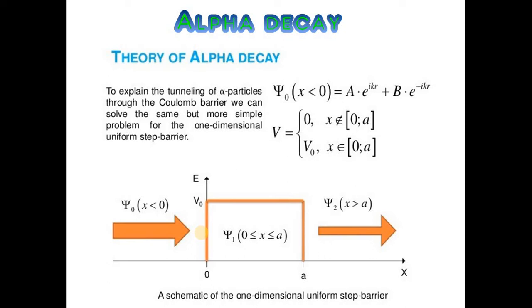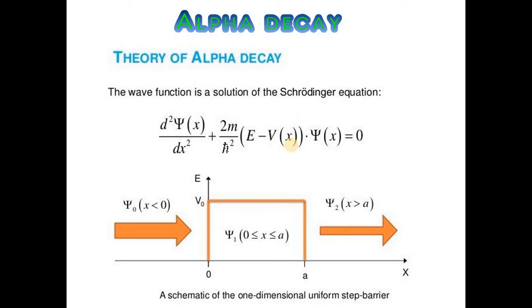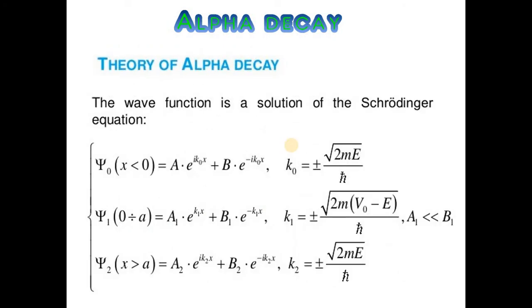We have a one-dimensional uniform step barrier, and the wave function is the solution of the Schrodinger equation given by the equation. The wave function is a solution of the Schrodinger equation for x less than 0 or x greater than a, and 0 divided by a.